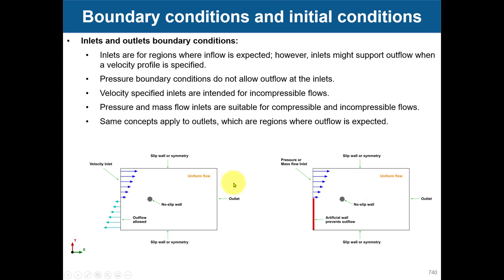Let me talk about inlet and outlet boundary conditions. Inlets are for regions where inflow is expected. However, inlets might also support outflow when a velocity profile is specified. Pressure boundary conditions do not allow outflow at the inlets — that is a big difference. As an inlet boundary condition you can have pressure or mass flow.